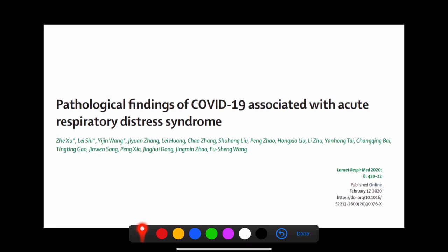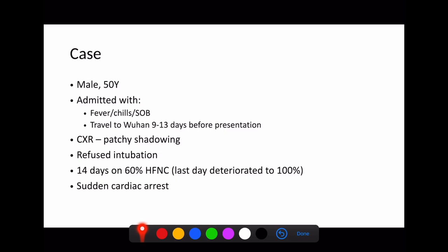And finally, the Lancet study, which again was just a small letter that was published. Again, not huge amounts of detail, but it just described one particular case, a 50-year-old who was admitted with fever, chills, who had travelled to Wuhan 9 to 13 days before presentation. So again, we're looking at patients who have been exposed to this virus, had a quiescent period of up to two weeks before they present with any symptoms. This particular patient refused intubation. Their initial chest x-ray showed patchy shadowing, which got worse on repeat imaging. And he lasted for 14 days on 60% high-flow oxygen because he refused intubation. And on that last day, deteriorated and then had a sudden cardiac arrest.